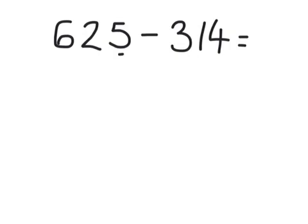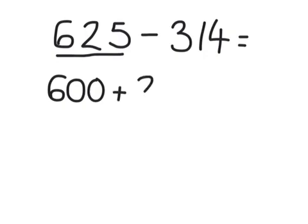The first one we'll partition out is 625. So, 600, add 20, add 5. I'm going to be subtracting 314.